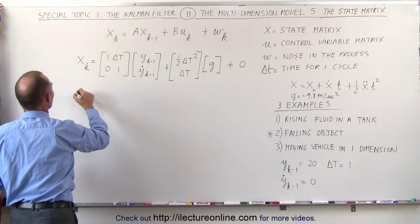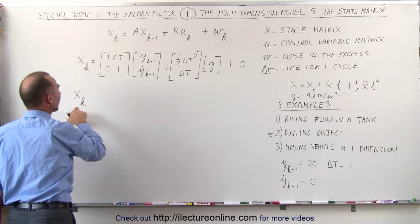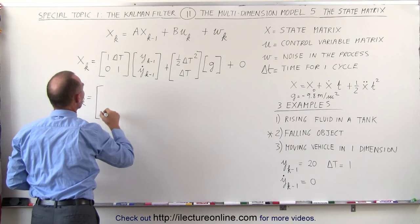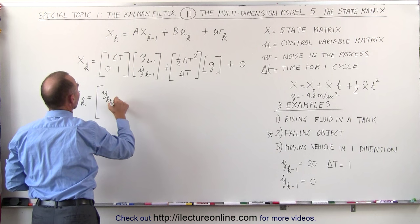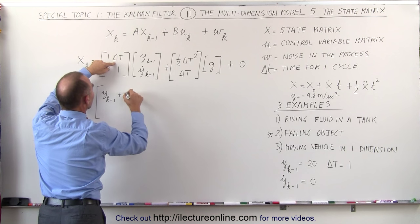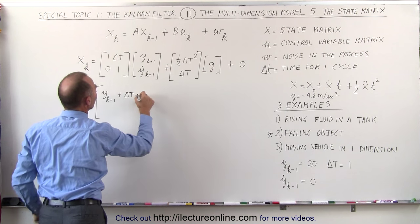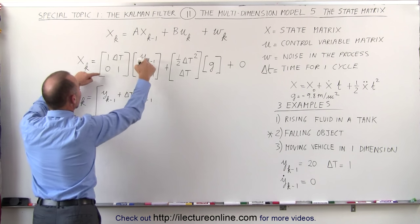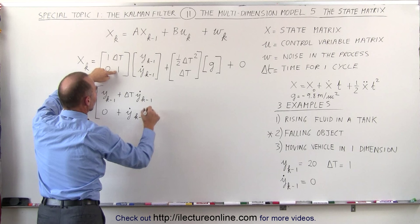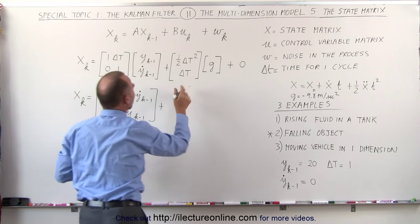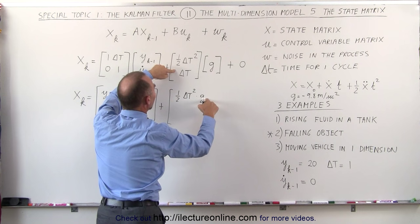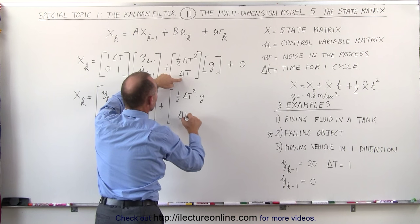Working out this matrix we get the following. x sub k, which is the new state based upon the previous state, is equal to multiplying the A matrix times the previous state plus the B matrix times the control variable. We get a 2 by 1 matrix giving us the previous position y of k minus 1, plus delta T times the previous velocity y-dot of k minus 1. To that we add one-half delta T squared times g, and then delta T times g for the velocity row. Remember g is minus 9.8.